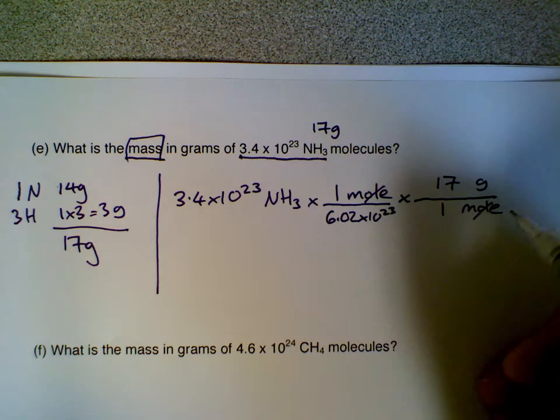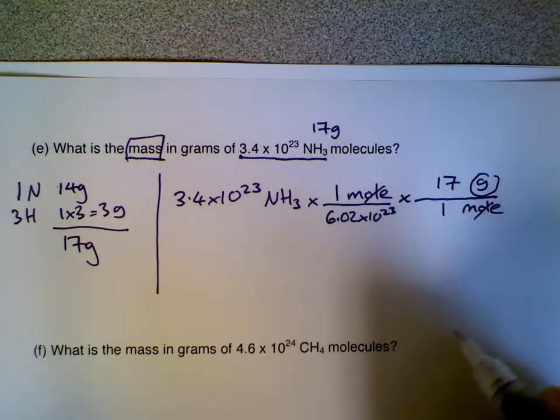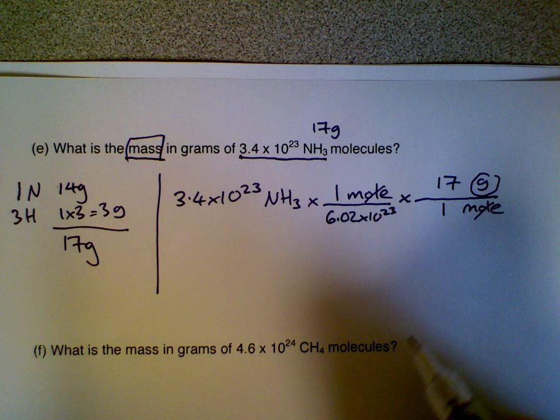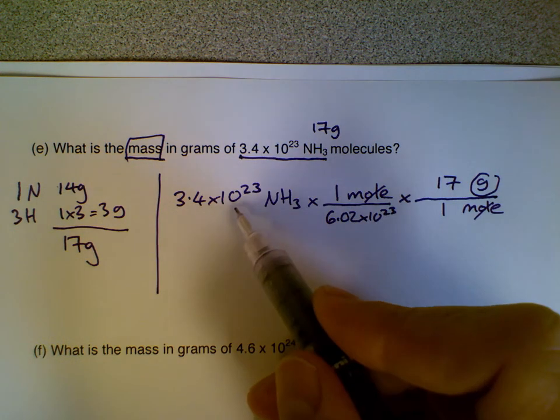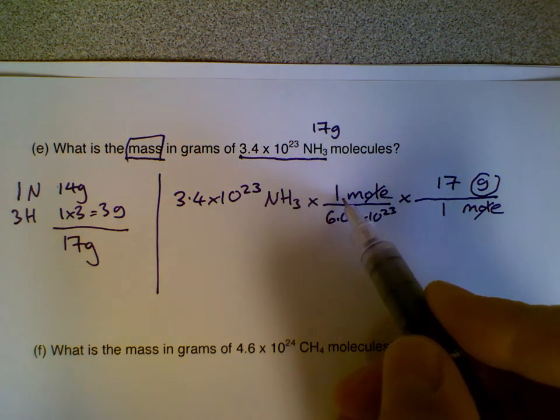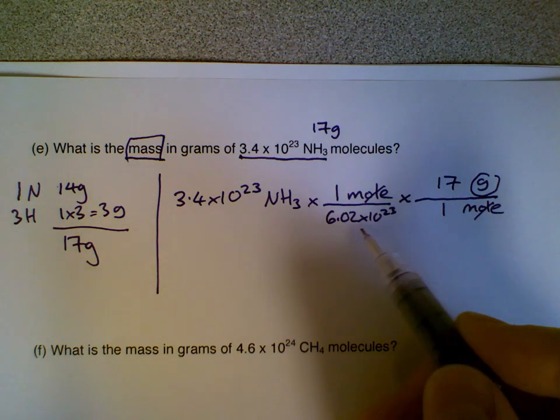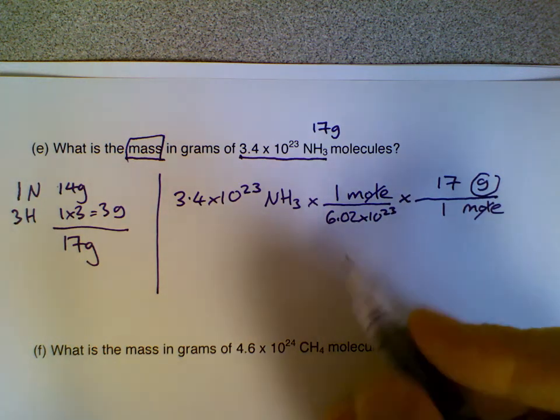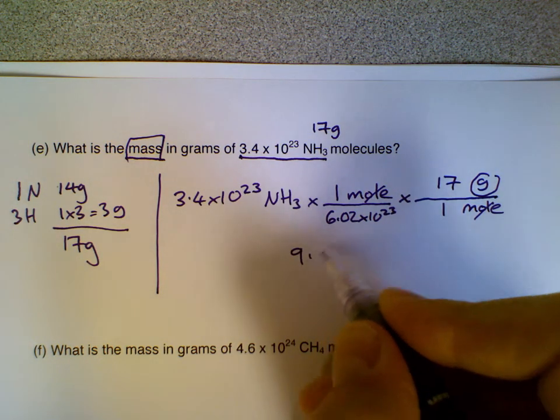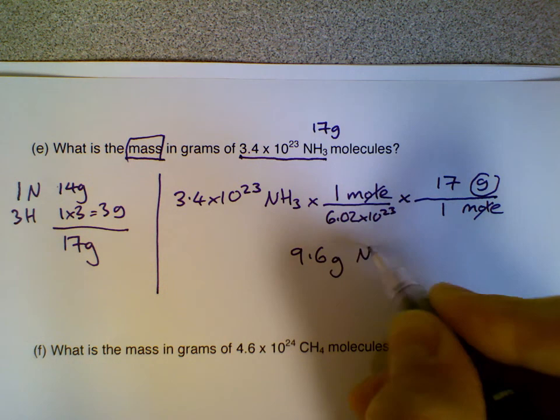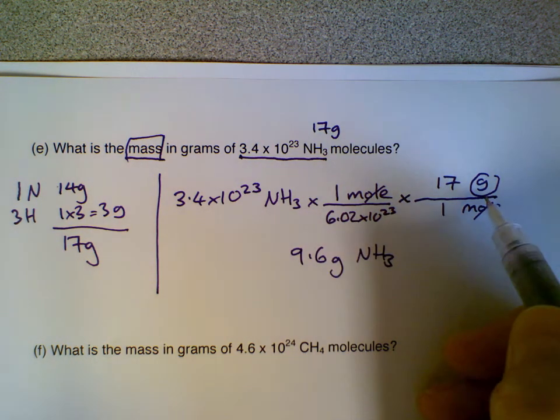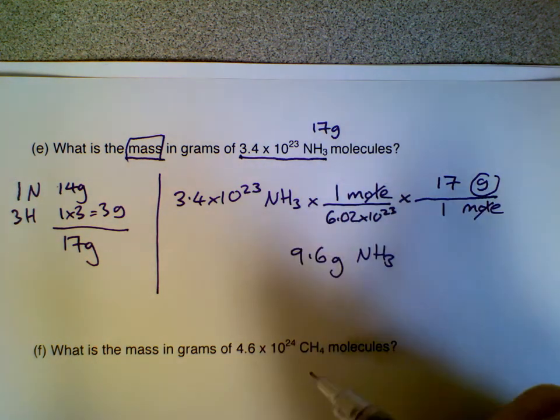The moles divide out, and we're left with the units grams, which is the ones we want for the answer. So to solve our problem, it's just 3.4 times 10 to the 23 times 1 times 17 divided by 6.02 times 10 to the 23 times 1. Put it into the calculator, and we get the answer 9.6 grams of NH3.